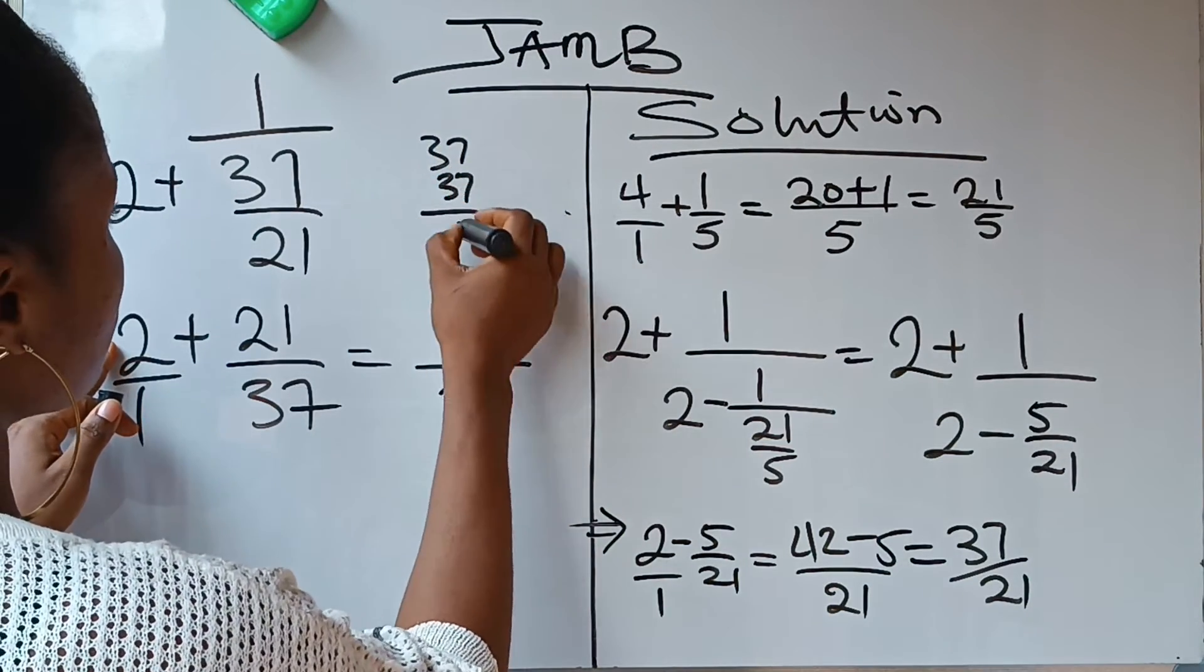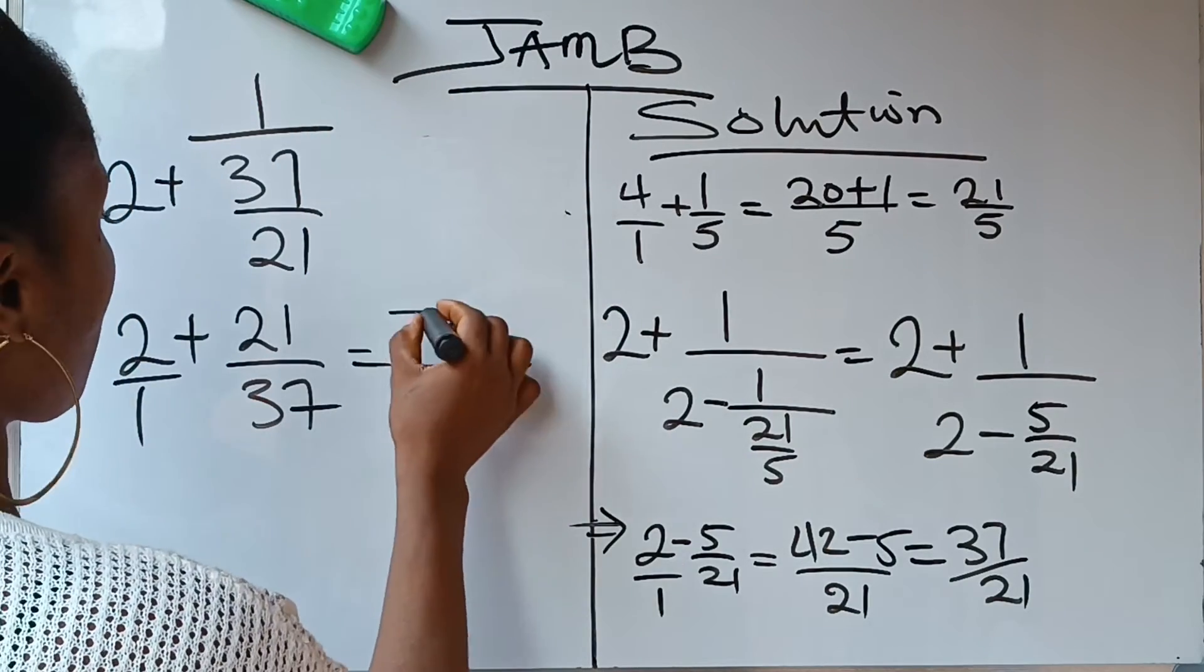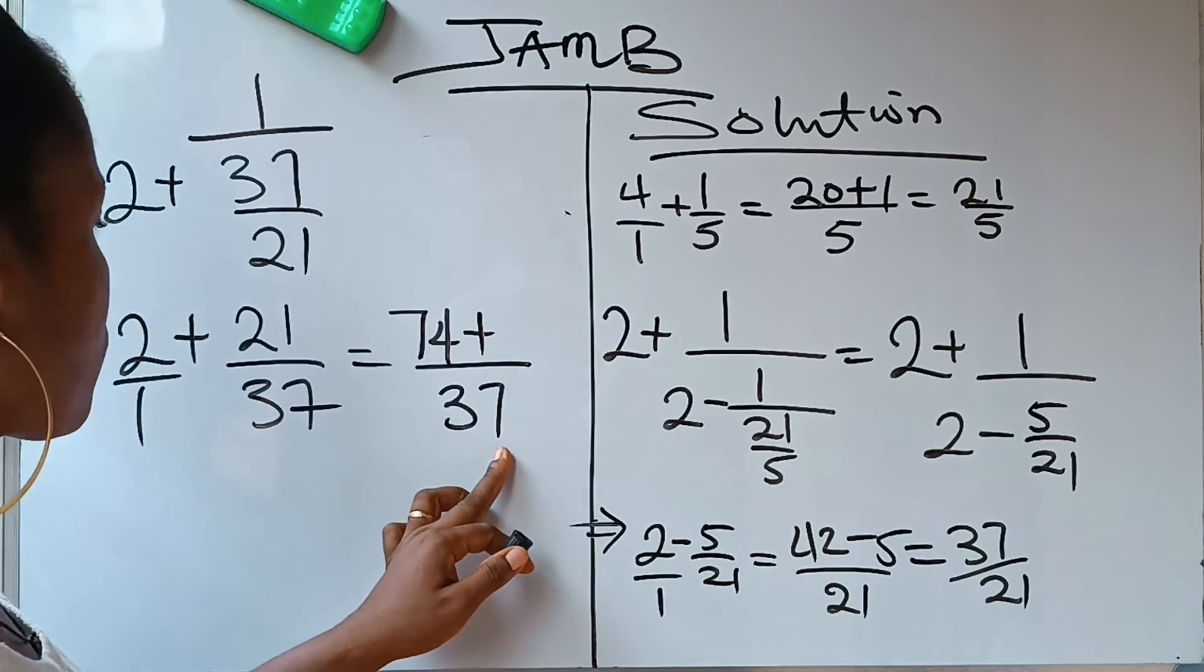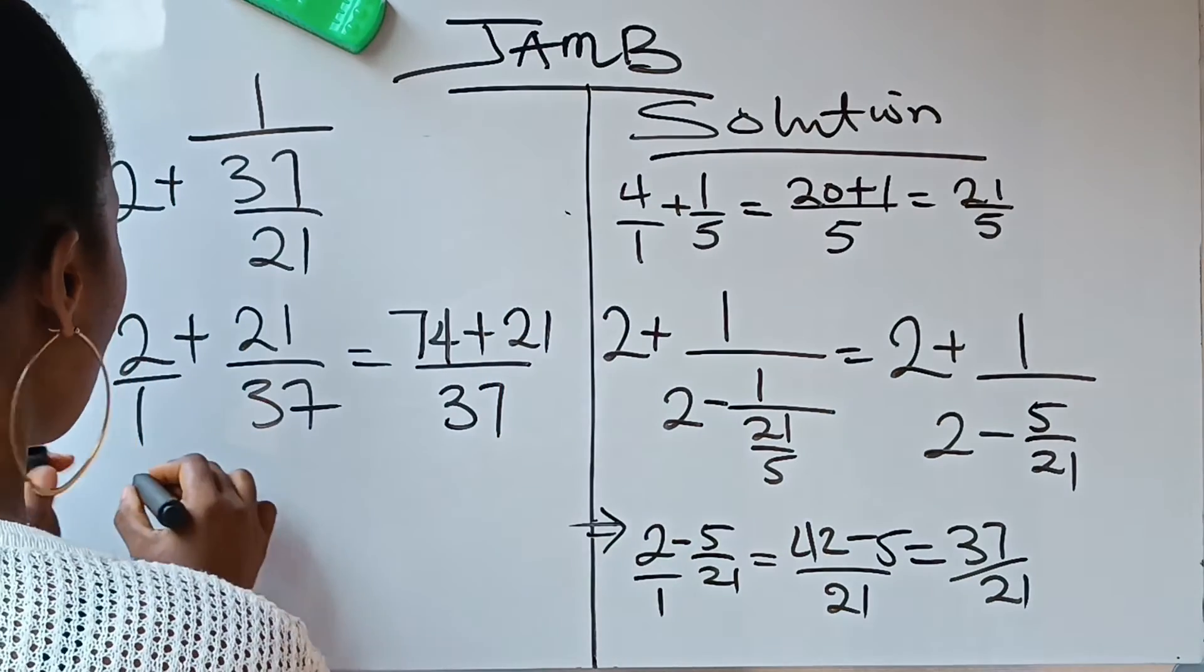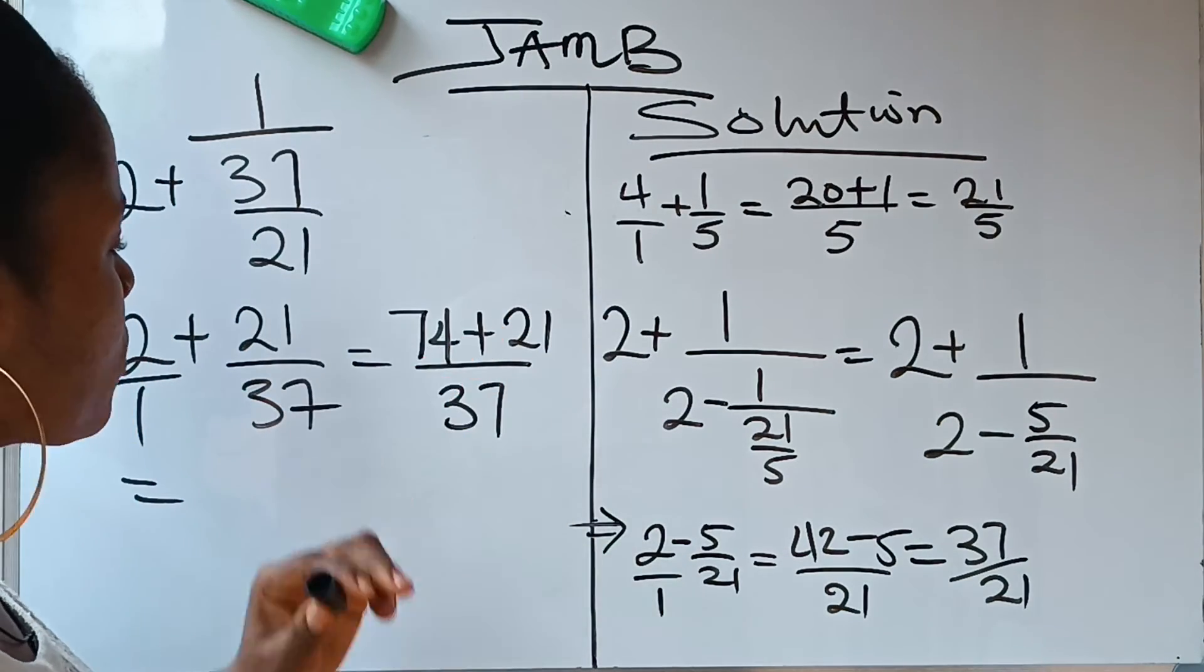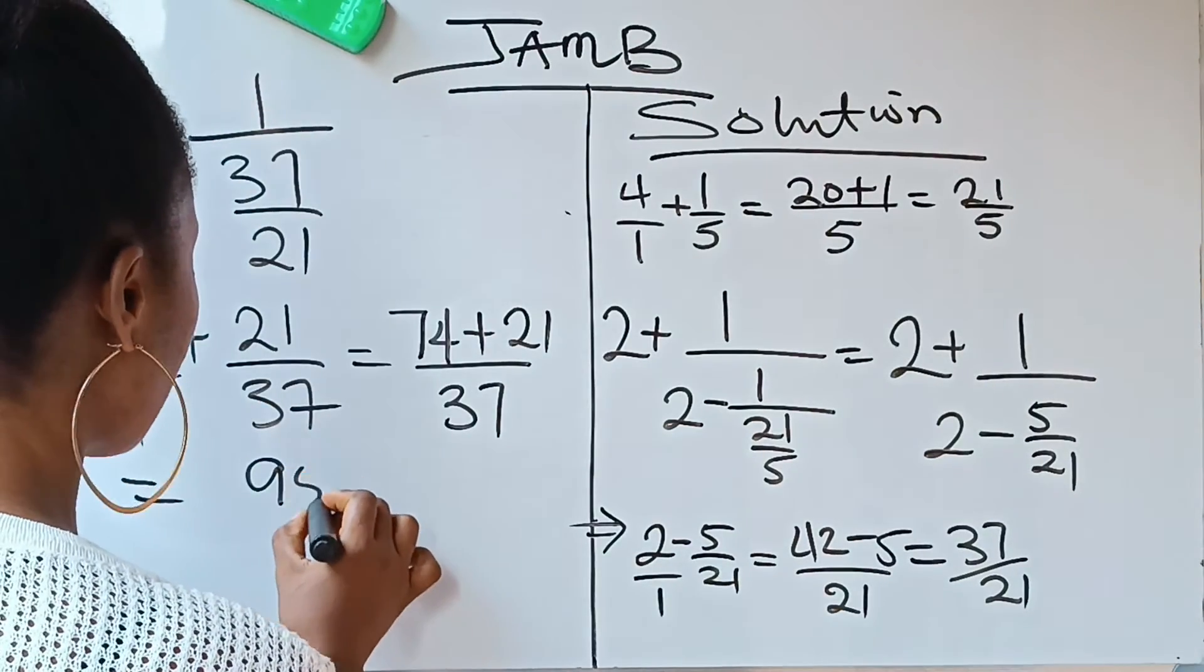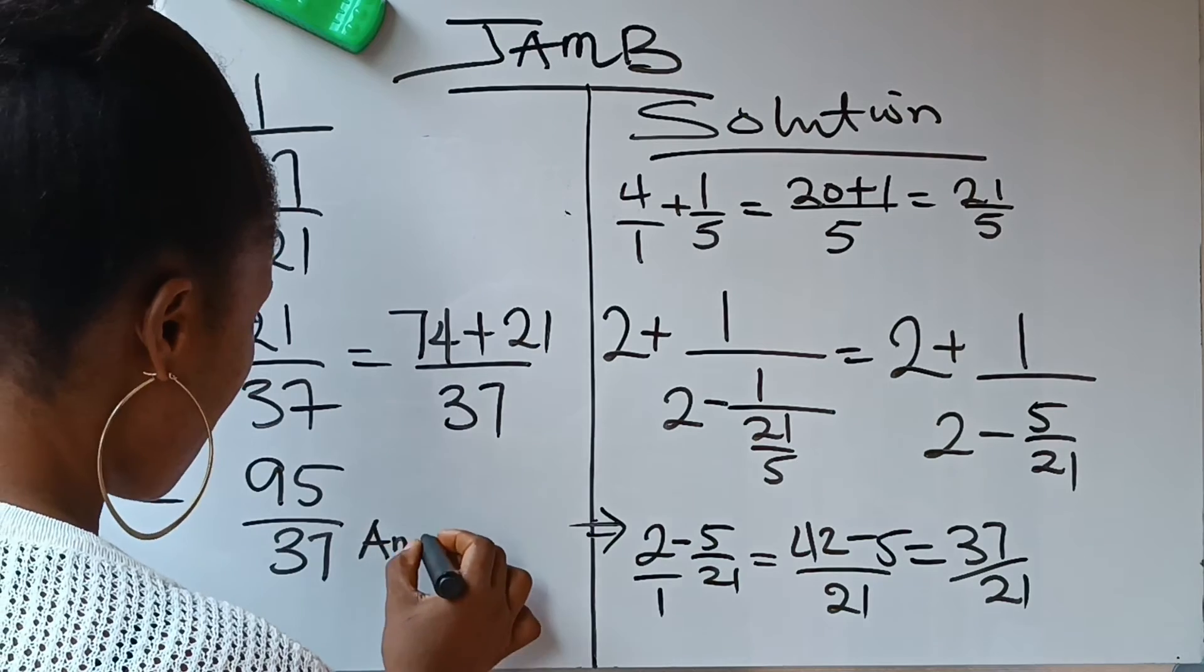Plus, 37 divided by 37, you are going to have 1. 1 times 21 will give you 21. So what do we have here? 74 plus 21 is going to give us 95. So you are going to have 95 over 37 as your answer.